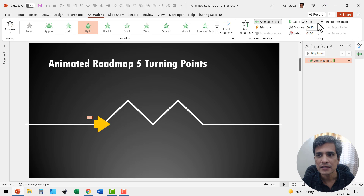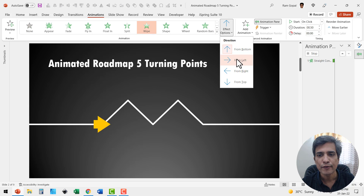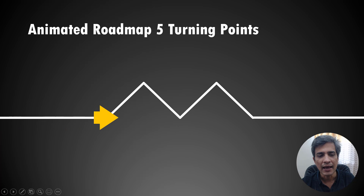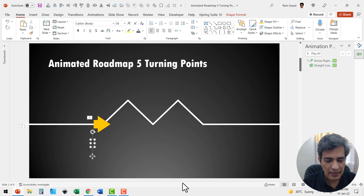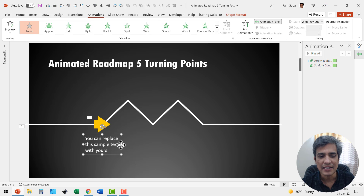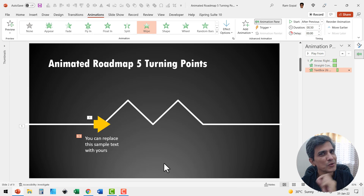Increase the duration of the fly-in to one second. While this flies in, let us also have it wiped in — select it, use Wipe from Left, set it to happen With Previous, also for one second. Then go to Home, pick up the text box tool, write some text, and this text wipes in right after the arrow comes into place. Select the text box, go to Animations, set Wipe from Top, and have it happen After Previous. So far we have introduced one point.